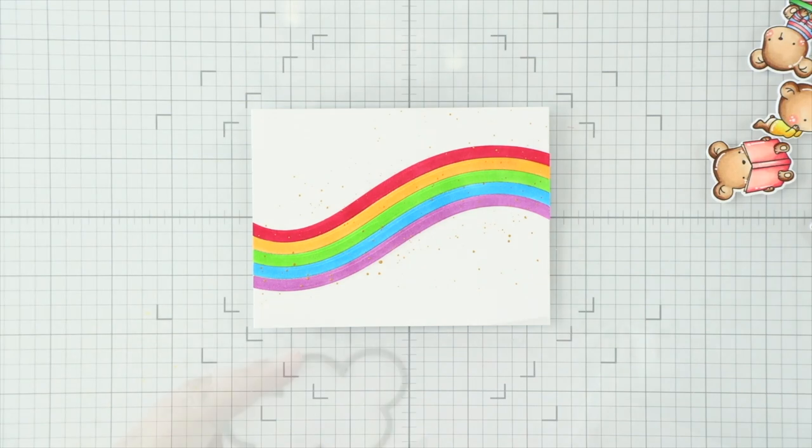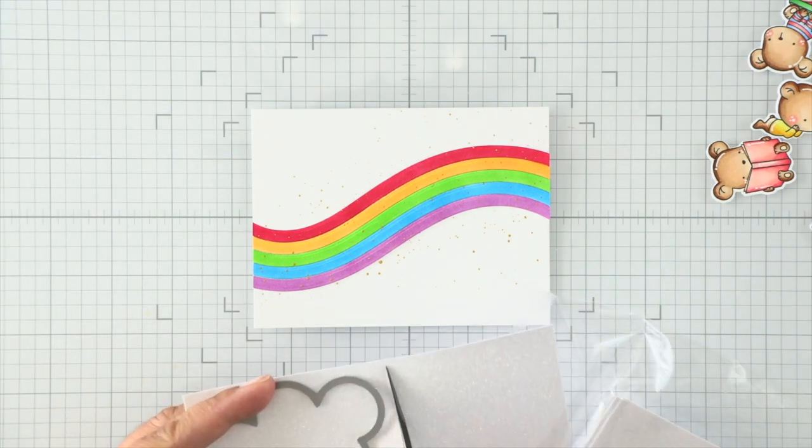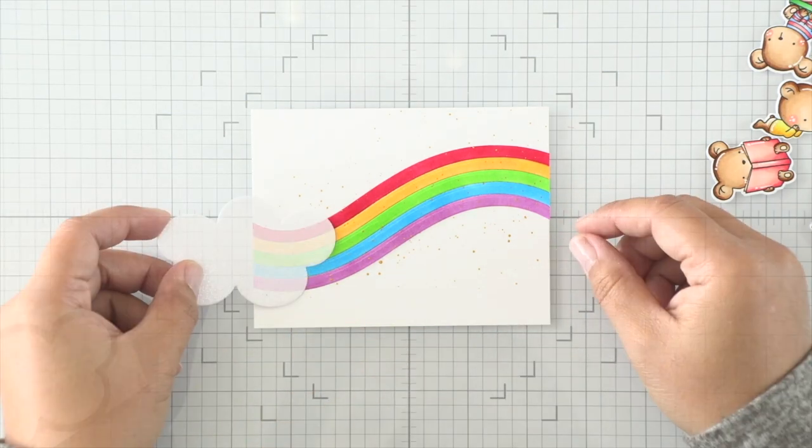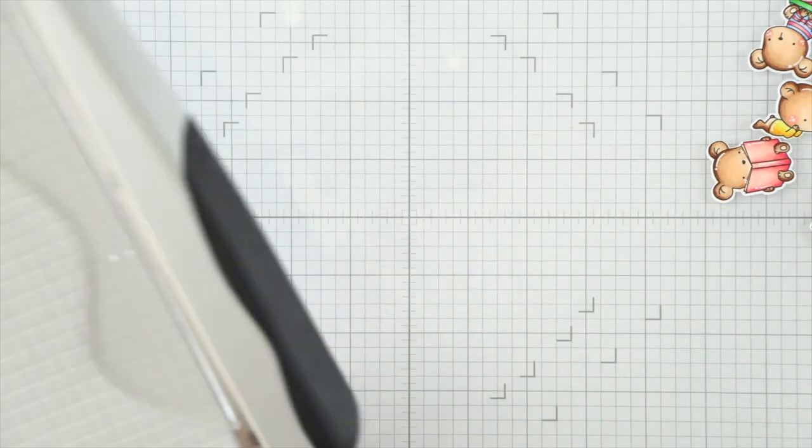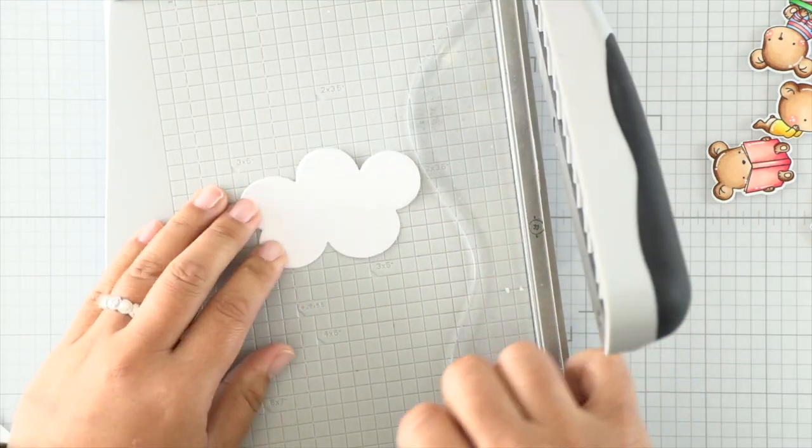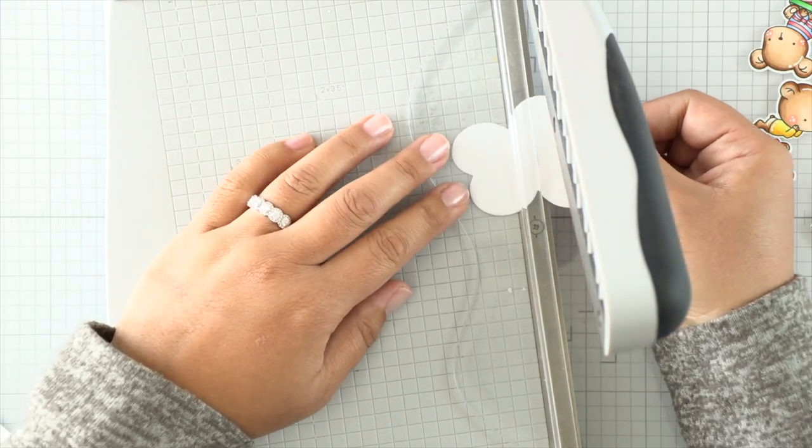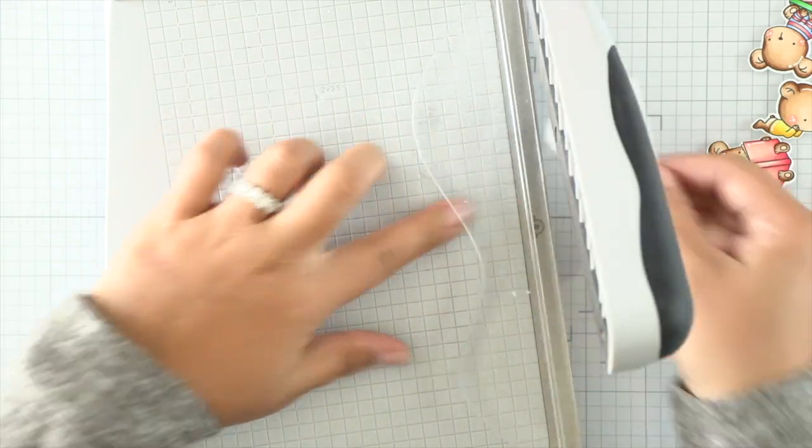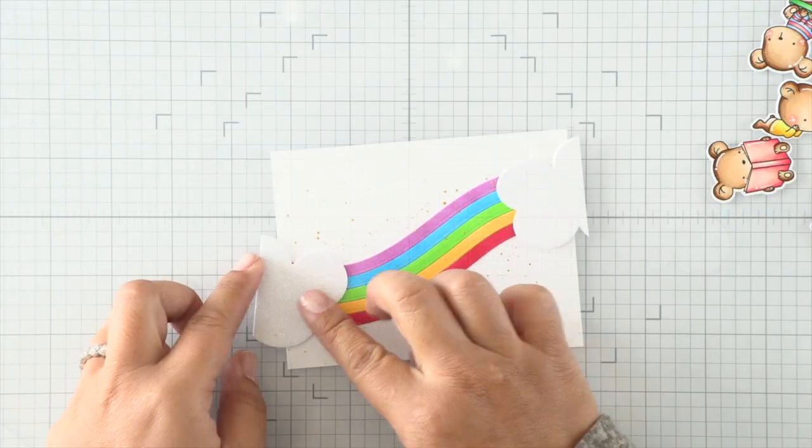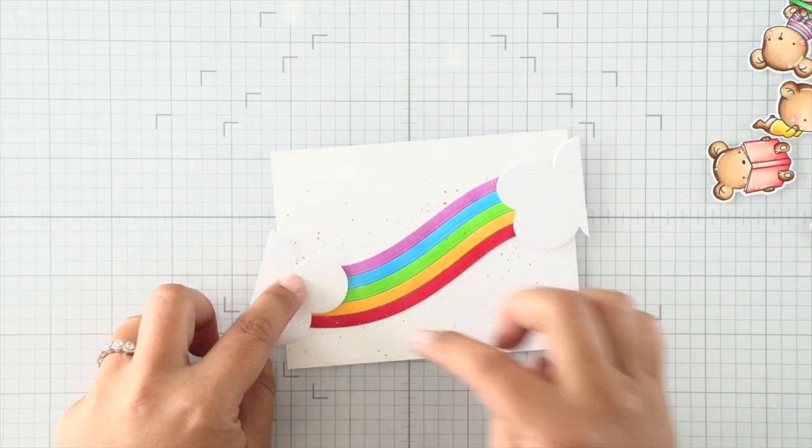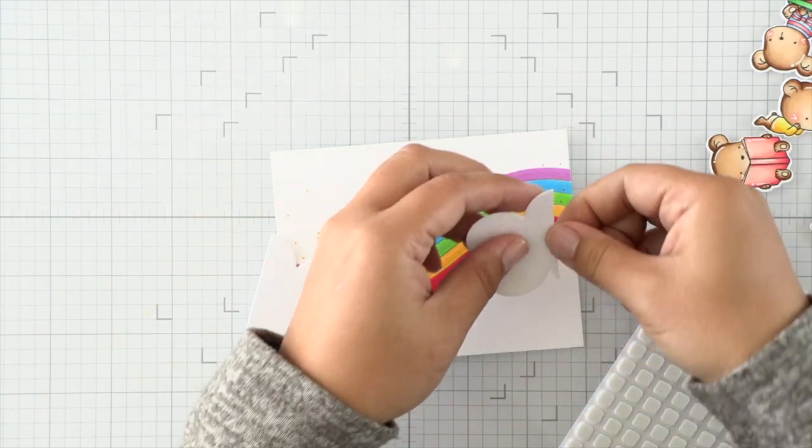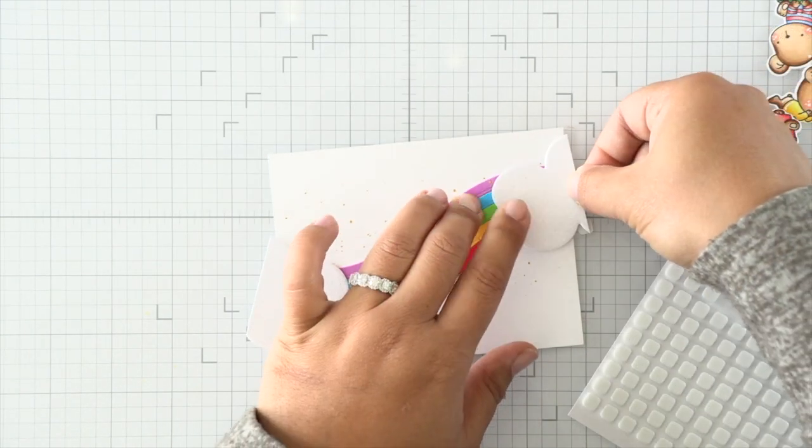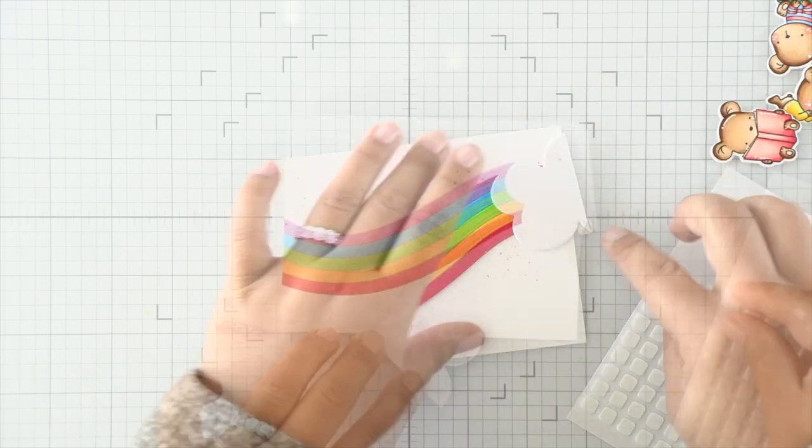While it's drying, I'm going to die cut a cloud. This cloud is from the straight up rainbow die, one of my favorite rainbow sets from MFT. I've just die cut one because I'm going to cut this in half and use both sides, so I'm not wasting any cardstock. I'm using white glitter cardstock from Simon Says Stamp. It's got some nice sparkles—it's going to give your card some more texture and interest.